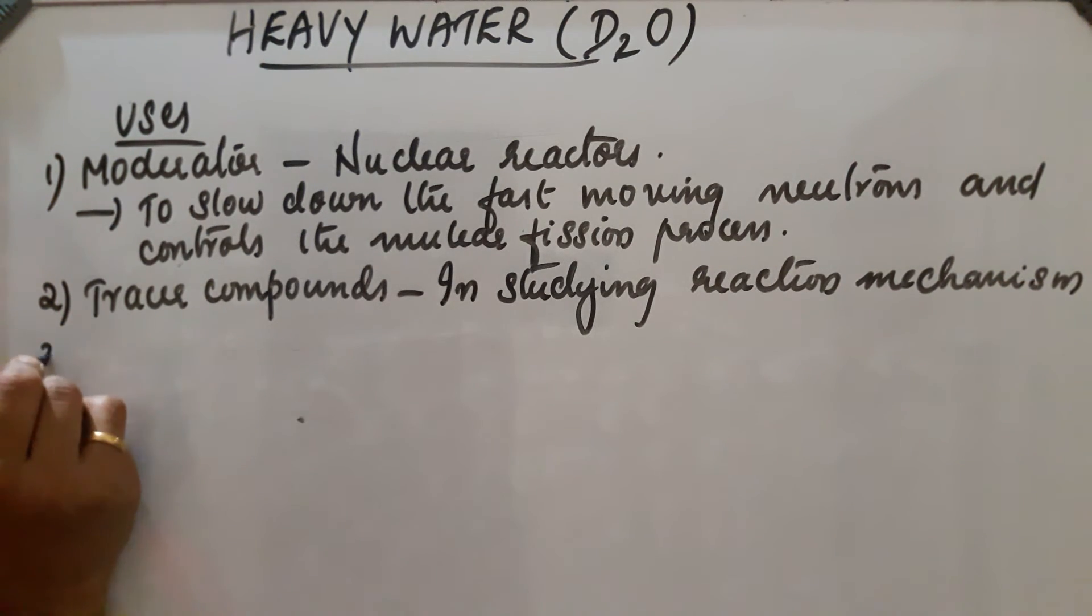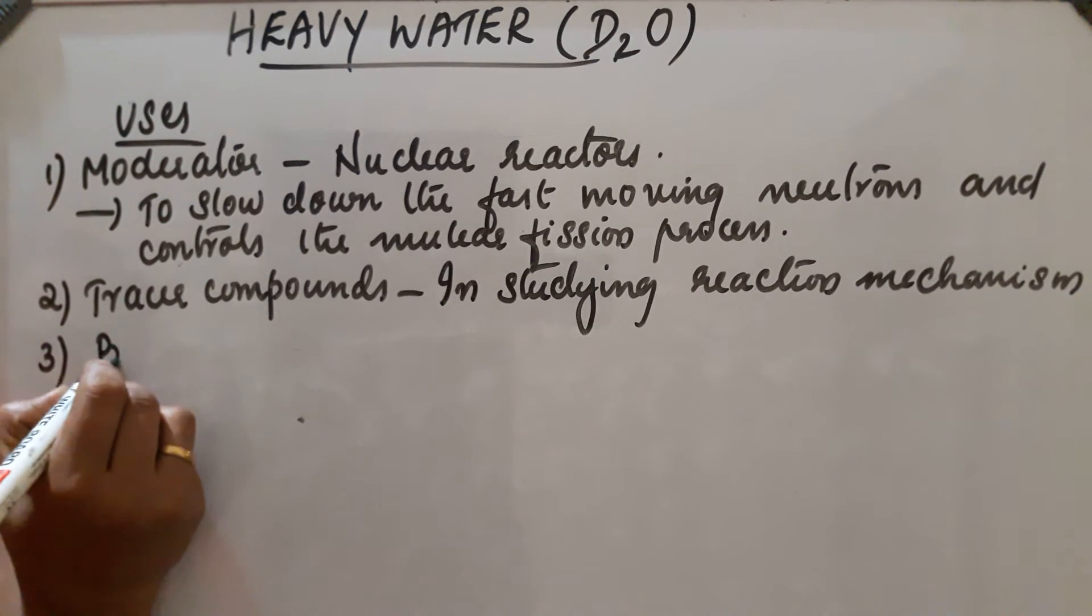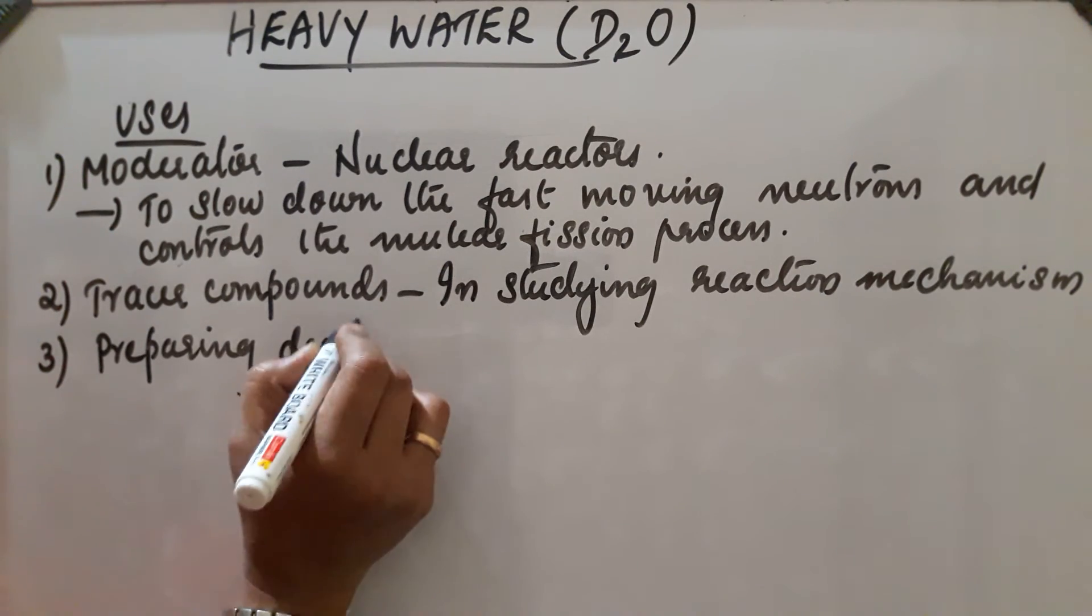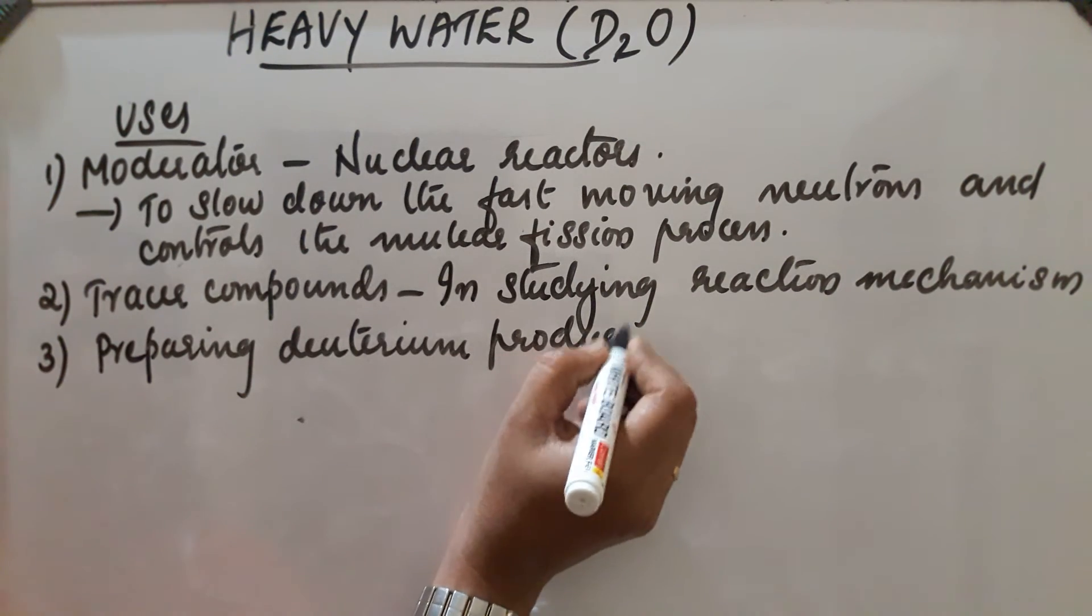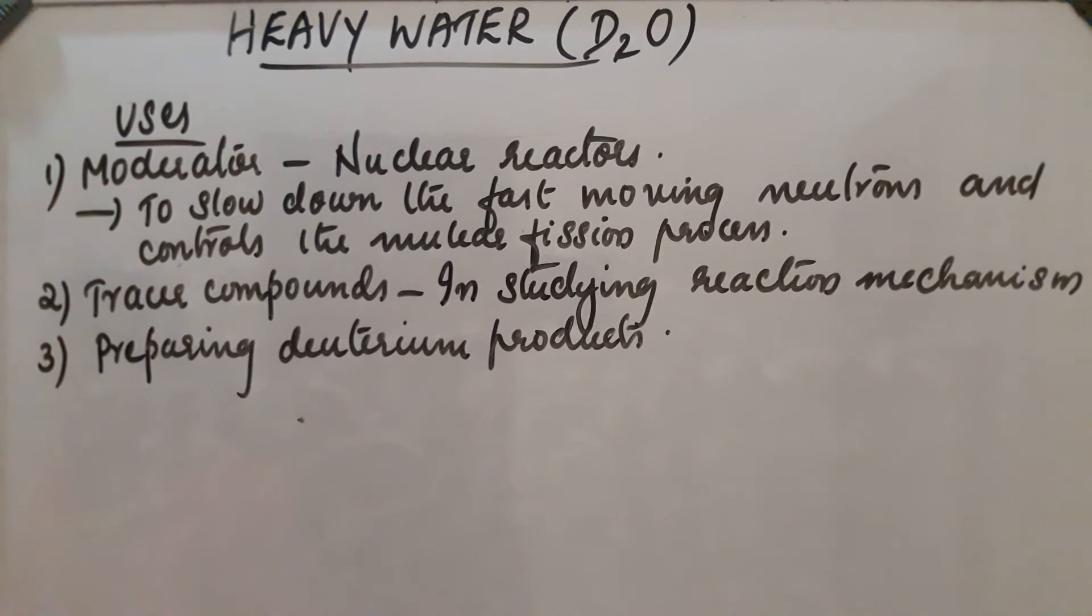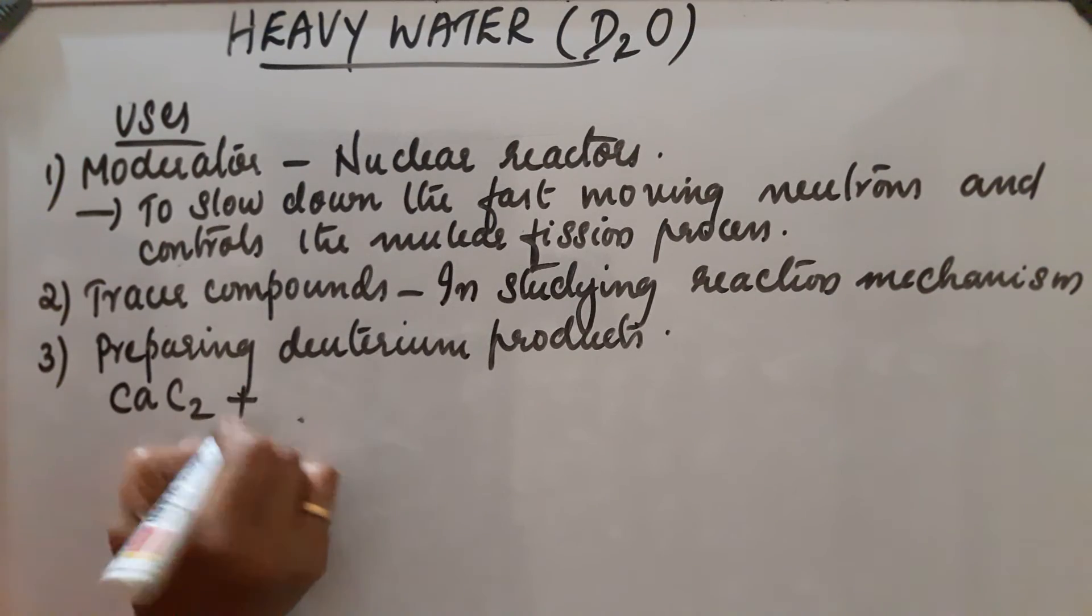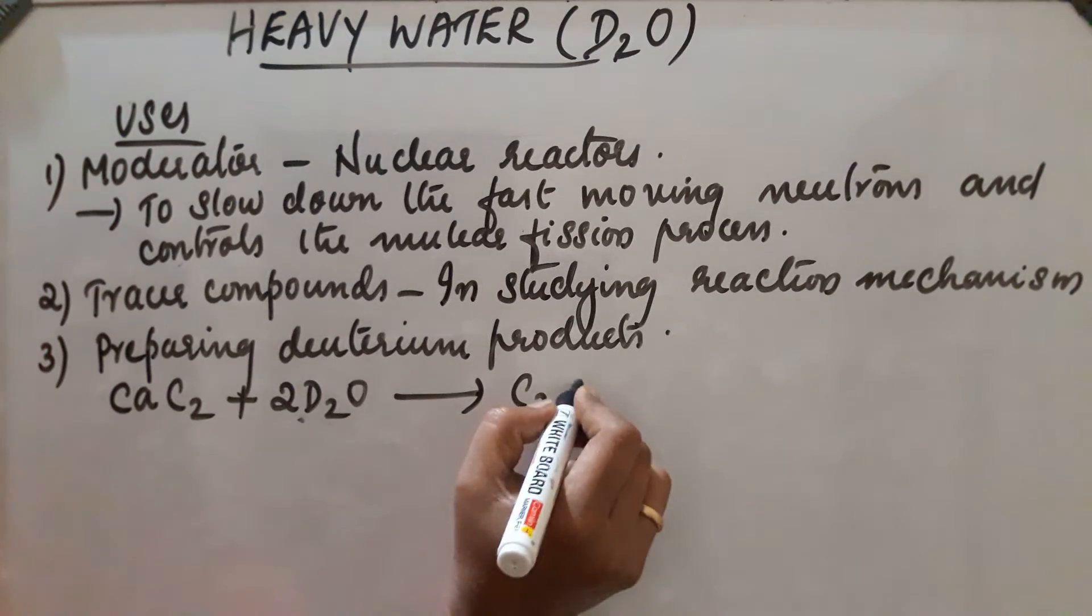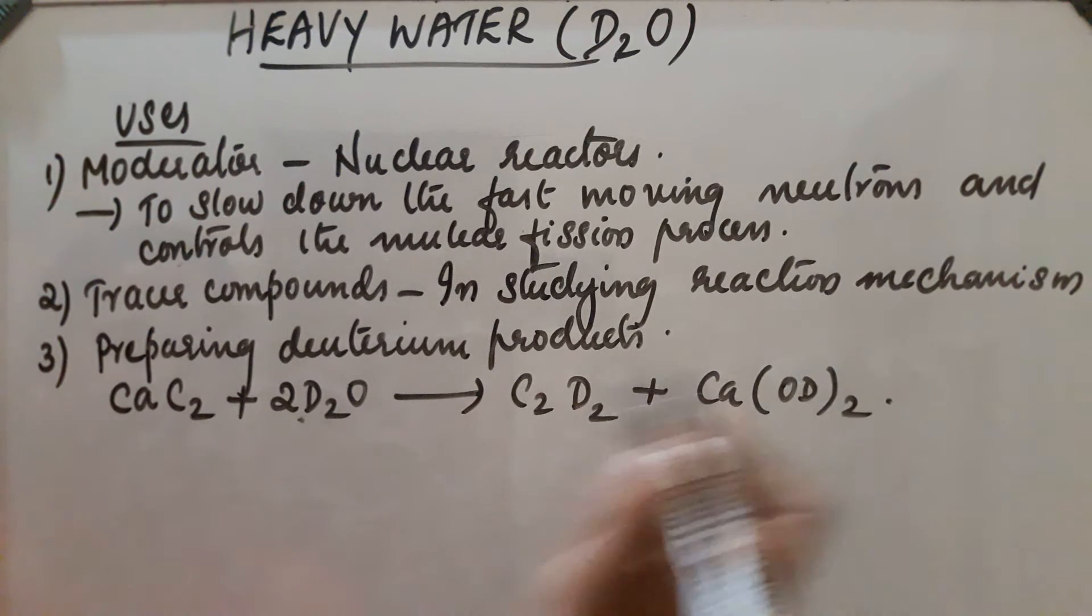It is used for preparing deuterium products. D2O is used as a starting material for different reactions. For example, CaC2 calcium carbide on reaction with deuterium oxide gives C2D2 plus Ca(OD)2.